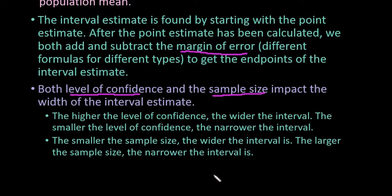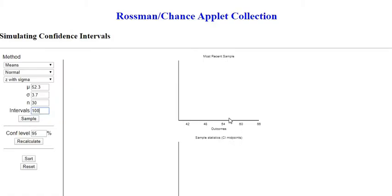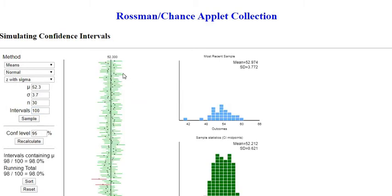Let me show you a simulation. We're pulling from a population that has a mean of 52.3 and a standard deviation of 3.7. I'm going to start with a sample size of 30 and generate a hundred intervals. I'll use a 95% level of confidence to start with because that is the most commonly used confidence interval. When I sample, you can see a bunch of green lines show up.